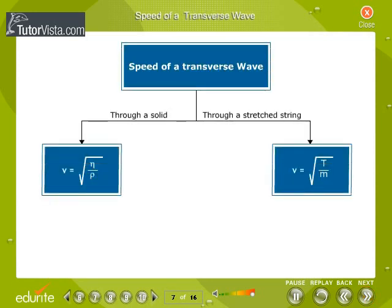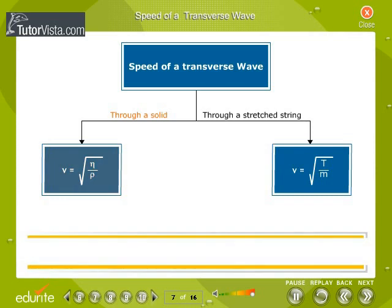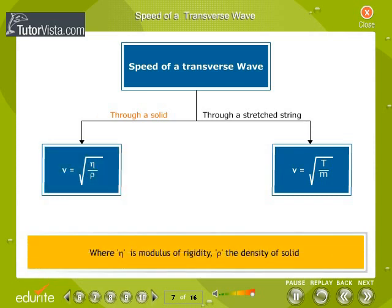Speed of transverse waves through solids is given by the equation V equals root of eta by rho, where eta is modulus of rigidity, rho the density of solid.